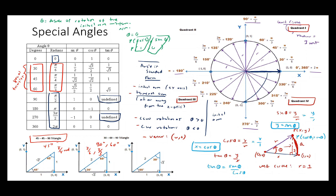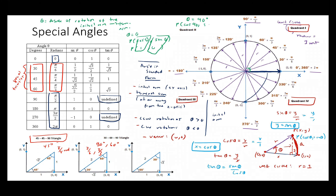If theta is 90 degrees, the point is (cosine 90, sine 90), which equals the point (0, 1) on the unit circle. This tells you cosine 90 is 0 and sine 90 is 1. You can apply this for all special angle values. You can also use this notion for any angle if you're given the corresponding point.